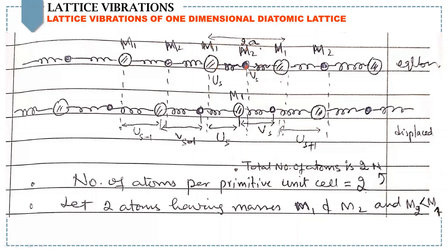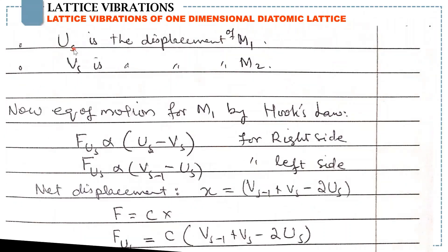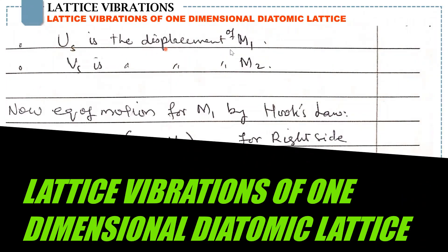One atom is M2 and another atom is half of this mass plus half of this mass. The number of atoms per primitive unit cell equals 2, with two atoms having masses M1 and M2, where M1 is bigger than M2. U_S is the displacement of M1 and V_S is the displacement of M2.